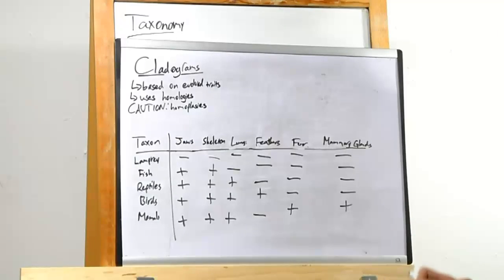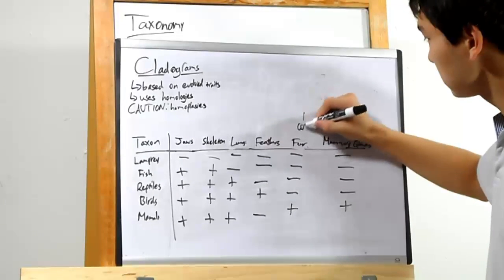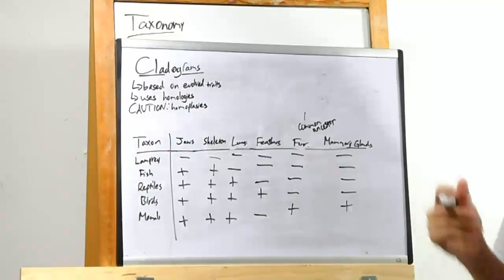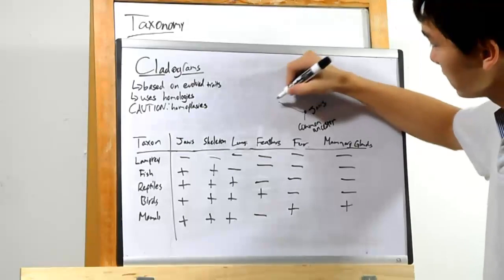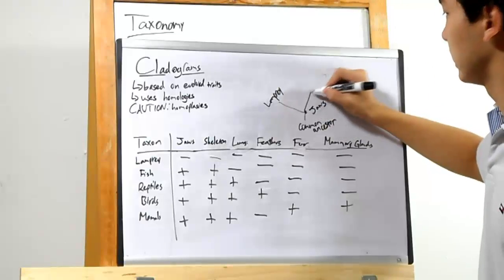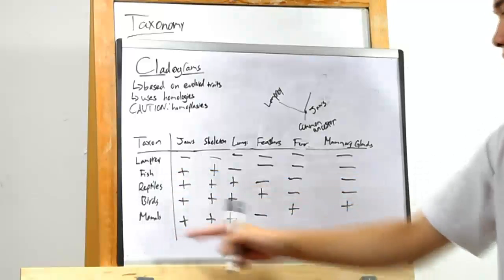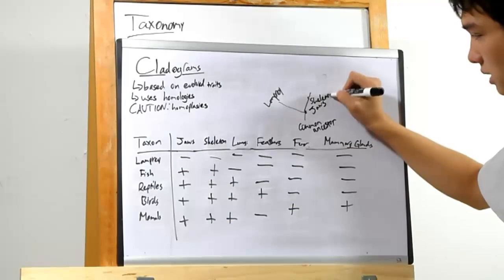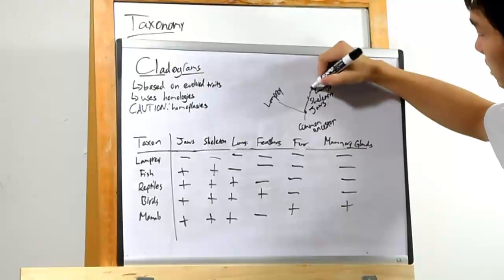With this data we can actually construct a cladogram. We start out with the common ancestor at the bottom, since we believe everything has a common ancestor. Our first splitting point is jaws — right here, lampreys branch off. We continue our main fork with skeleton — no changes here, these four all have a skeleton. The next branch is lungs — when we hit lungs, fish don't have lungs, so they branch off.